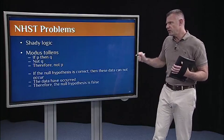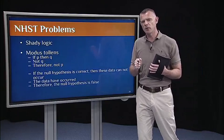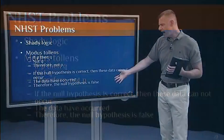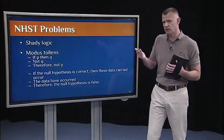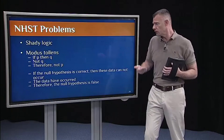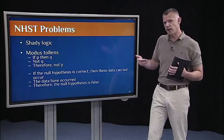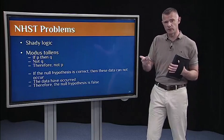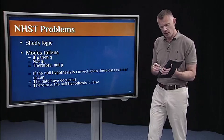And finally, NHST forces you to engage in what I call shady logic. And at first, it seems very clear. So, if you remember from basic logic class, modus tollens, everything on this slide is perfectly valid. So, modus tollens just says, if P, then Q, not Q, therefore not P. That's all valid. It would be valid if we said exactly that. If the null hypothesis is correct, right, we assume the null to be true. So, if the null is correct, then these data that I obtained in my experiment cannot occur. The data have occurred, therefore the null hypothesis is false. That's exactly modus tollens, that's all valid. But unfortunately, that's not how we do it.